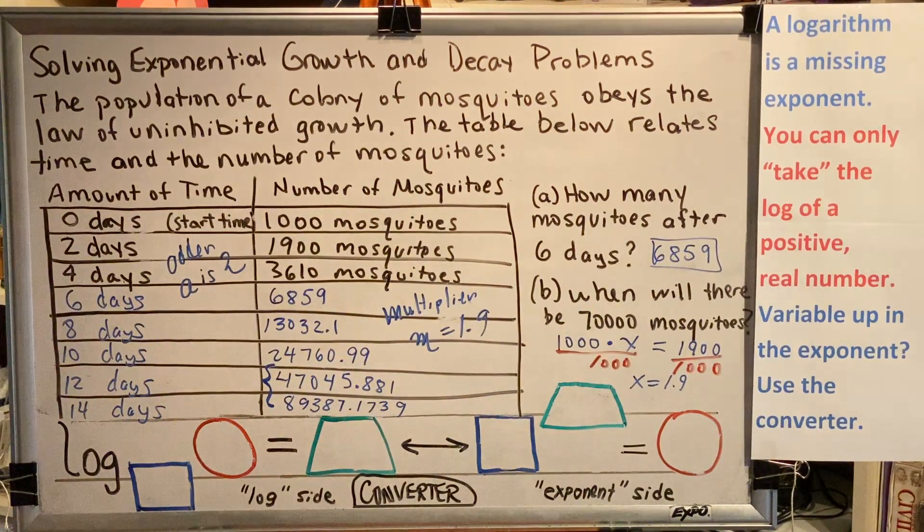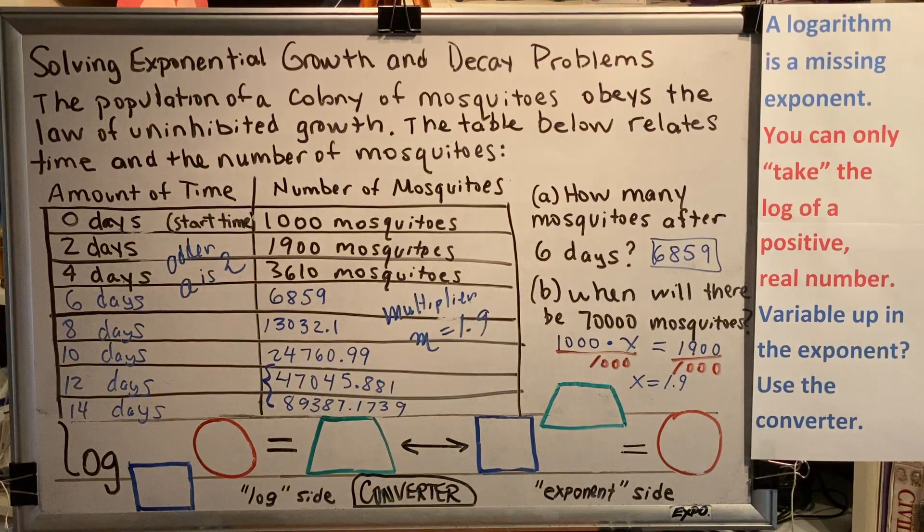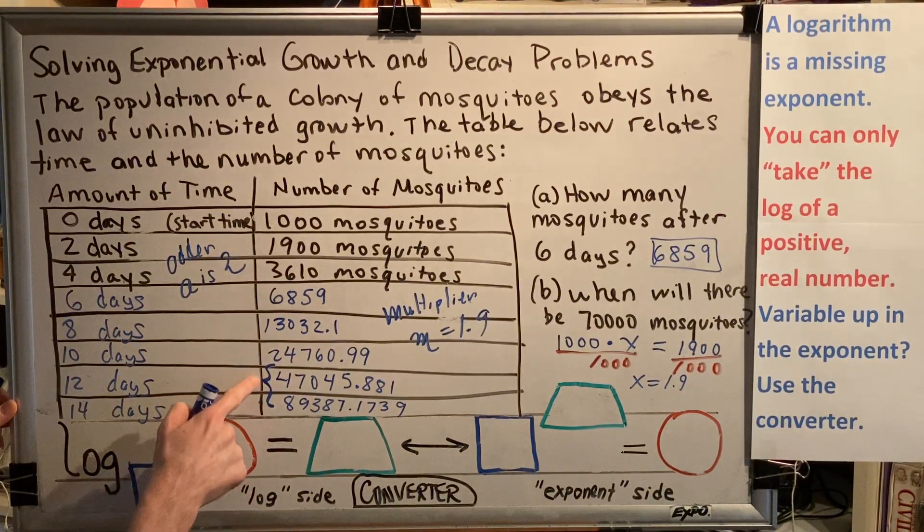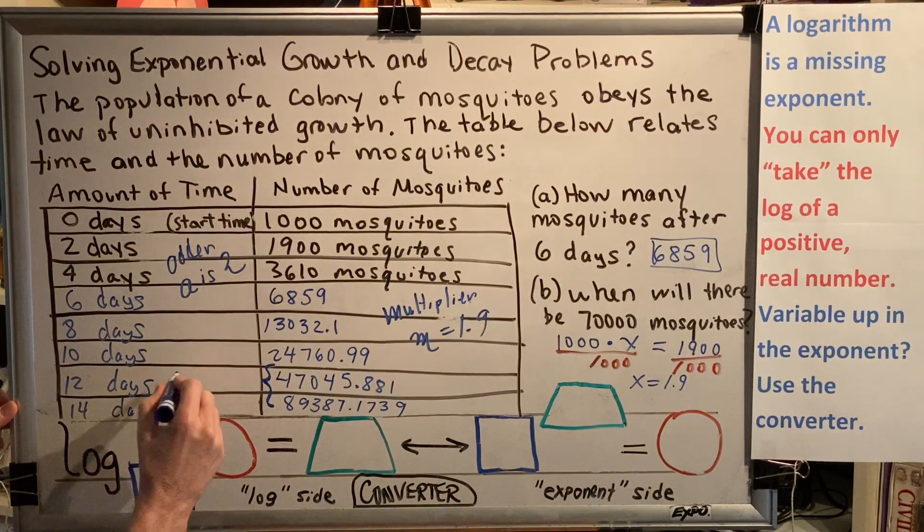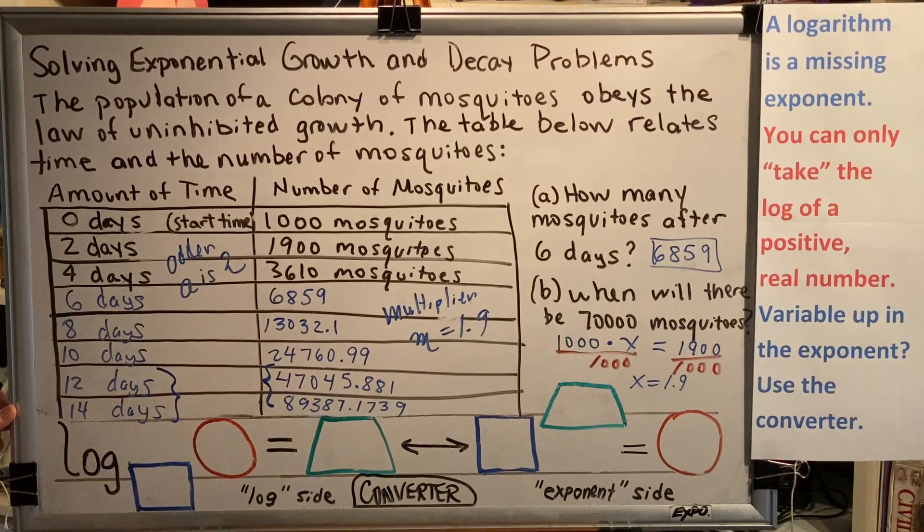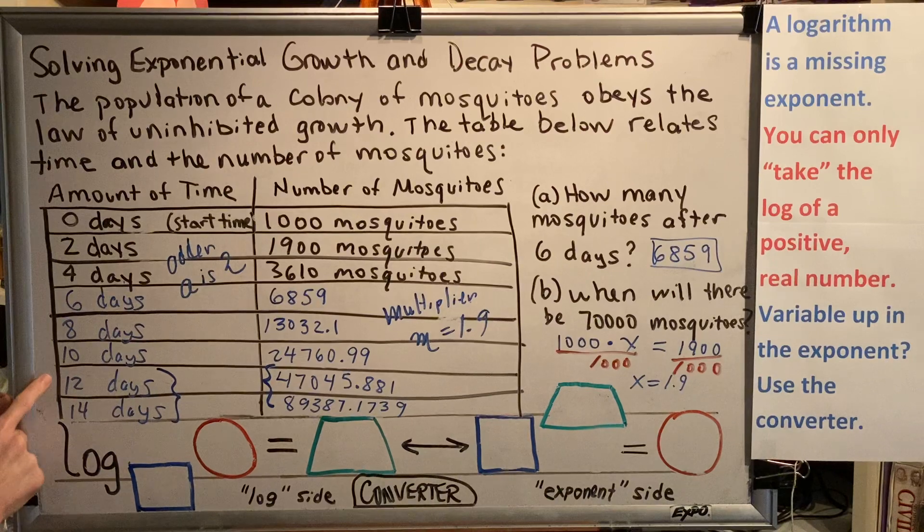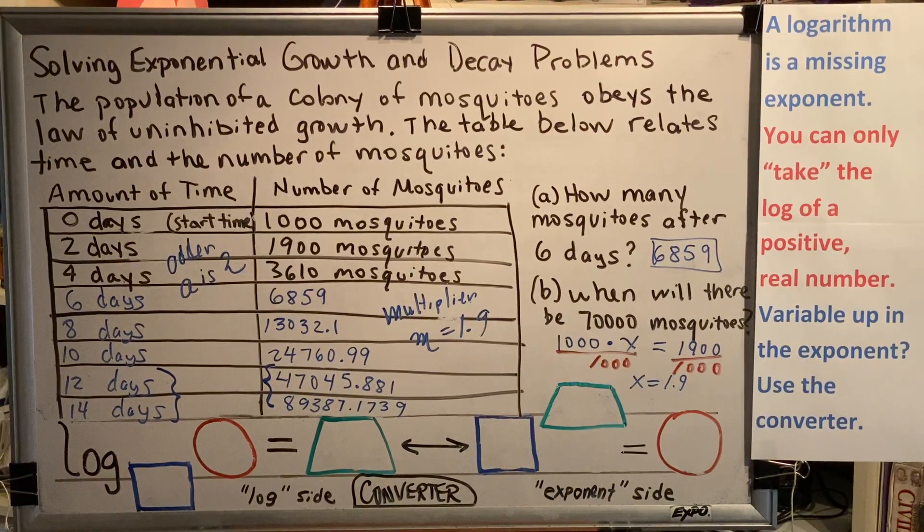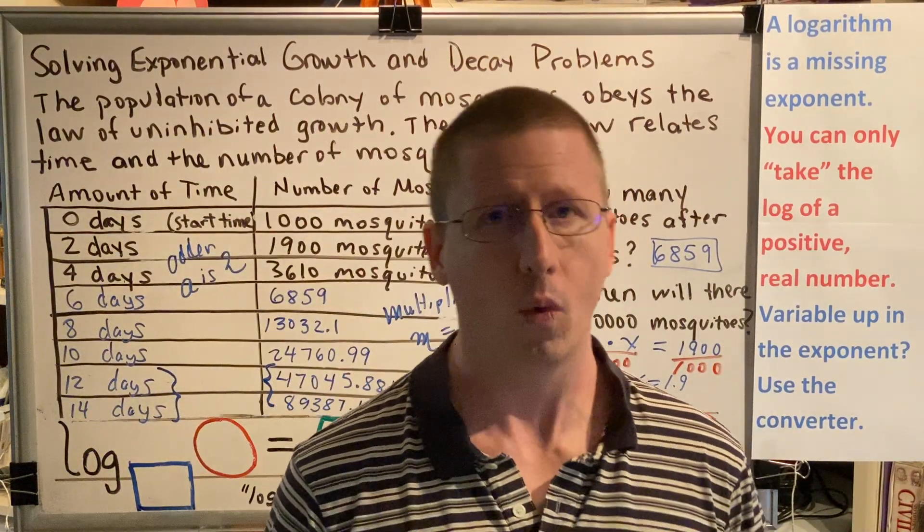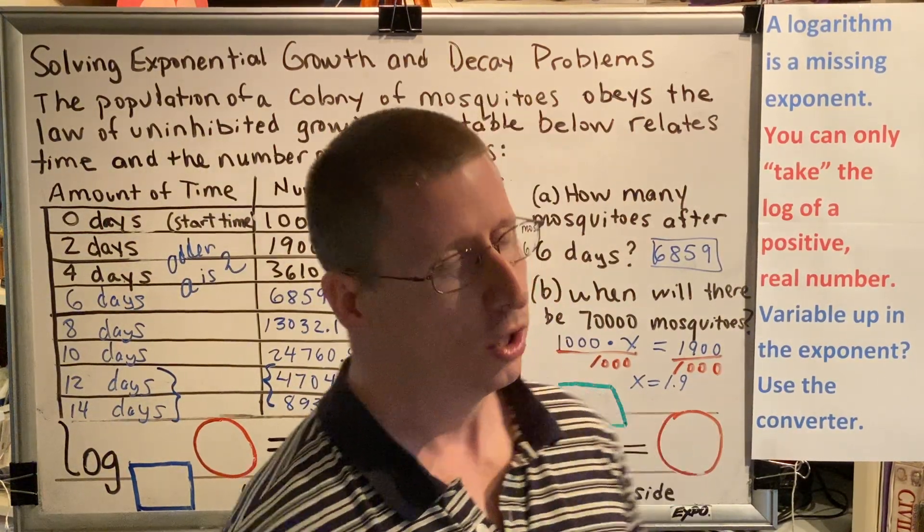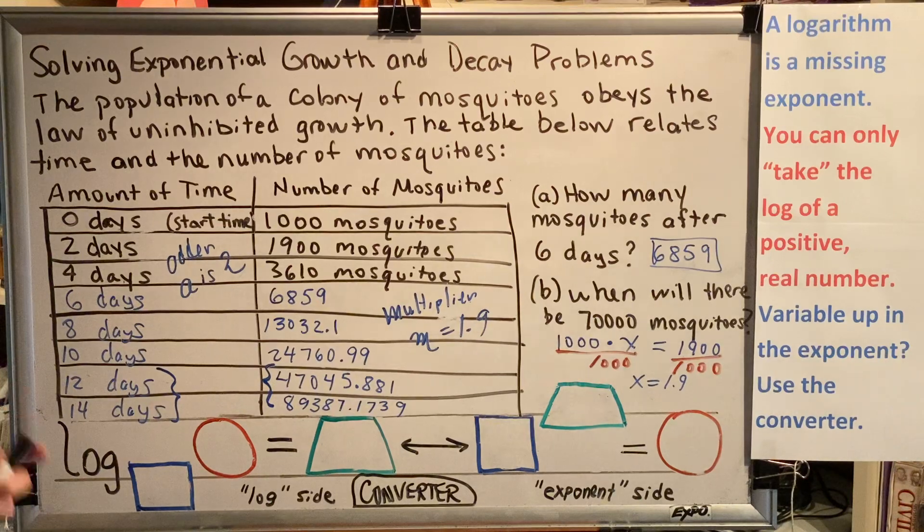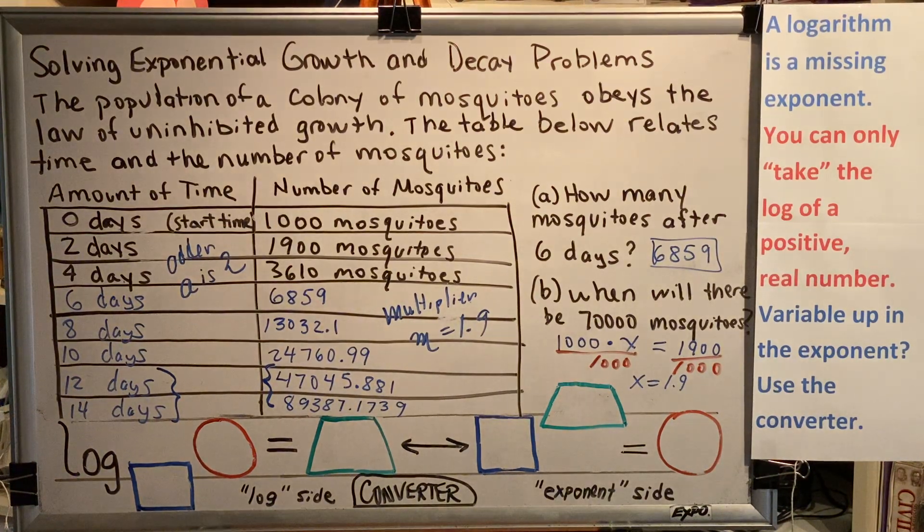But what we can do is use the exponential law equation. Now, since 70,000 is somewhere in between here and here, that means that the final answer we're looking for, when will there be 70,000 mosquitoes, is somewhere in between 12 and 14 days. Our job is to figure out where. Is it 12.3? Is it 13.1? Is it 13.6? We need to figure that out. And the way we're going to do that is using the exponential law equation.